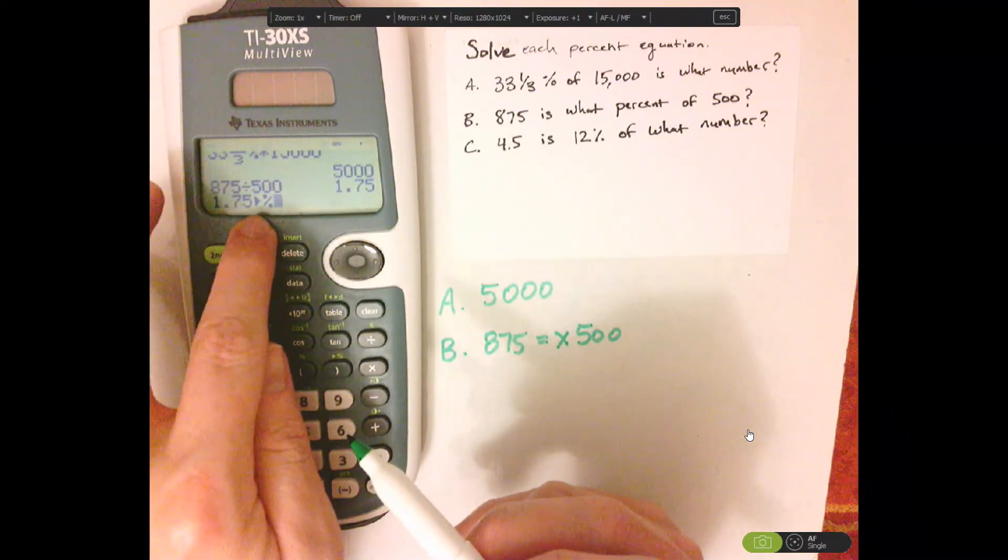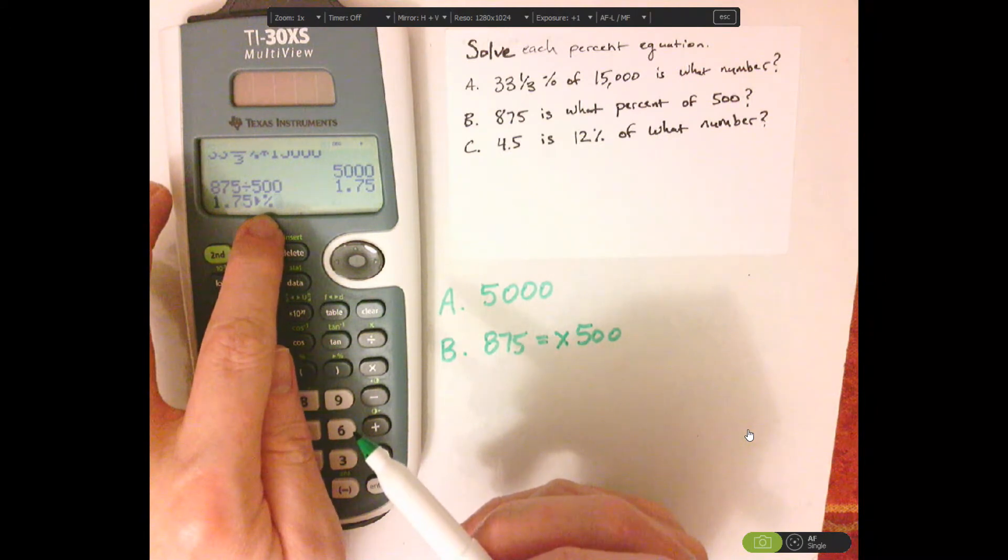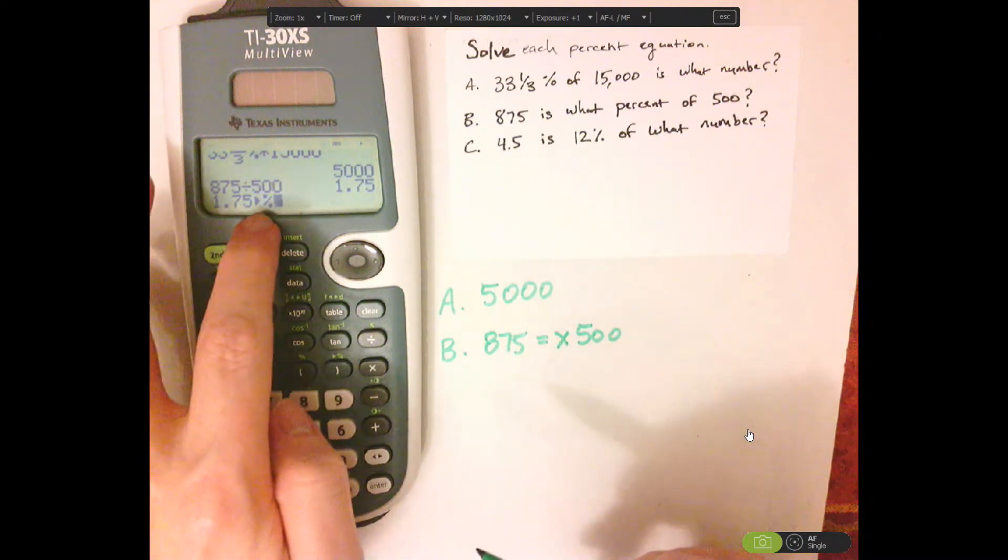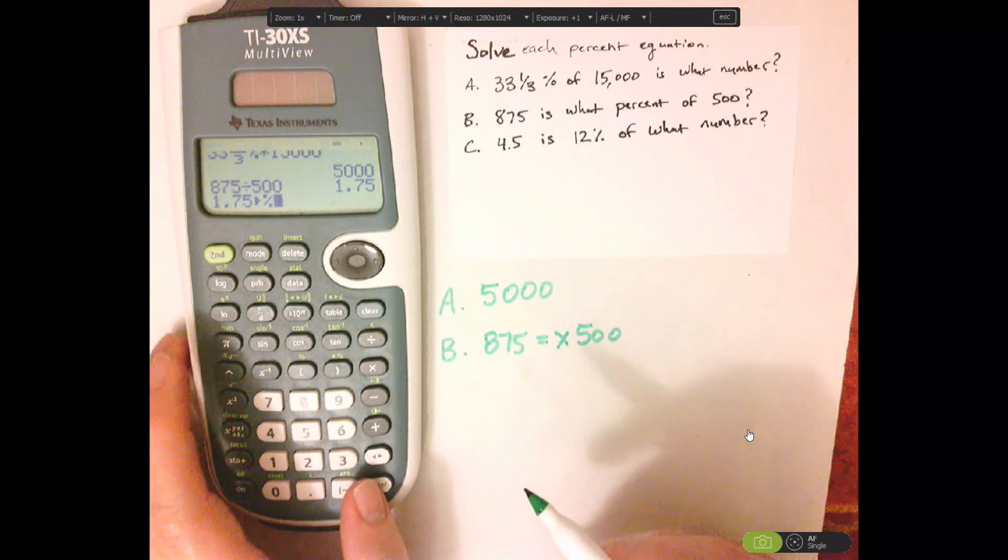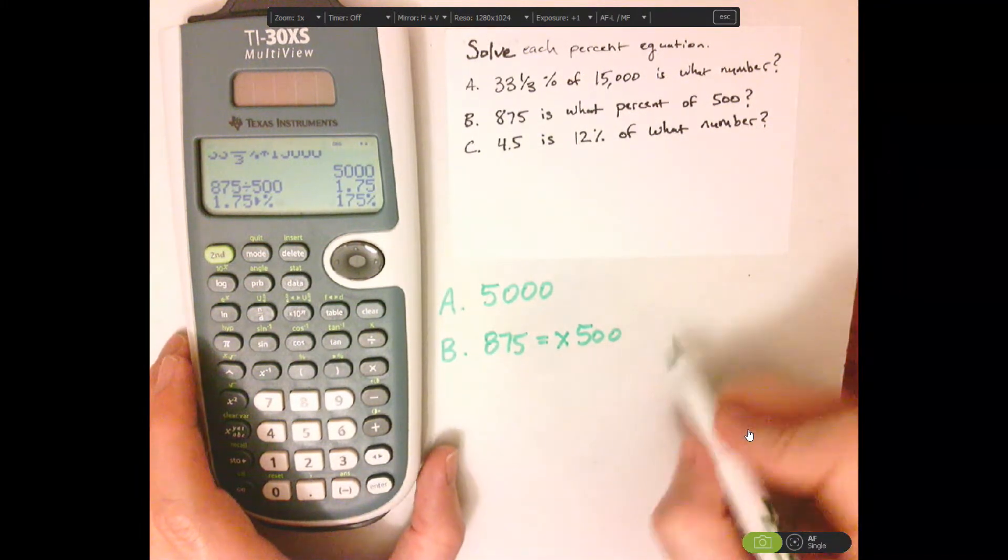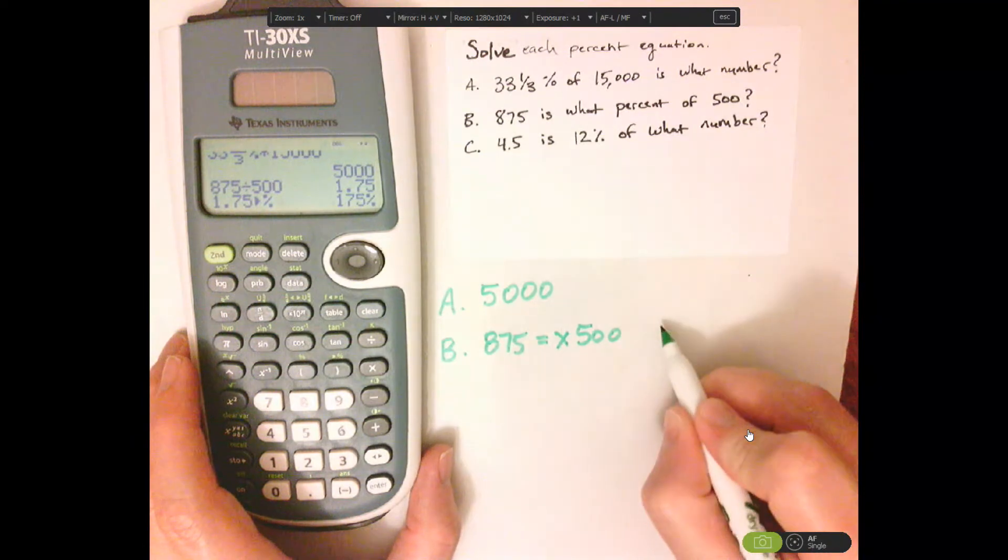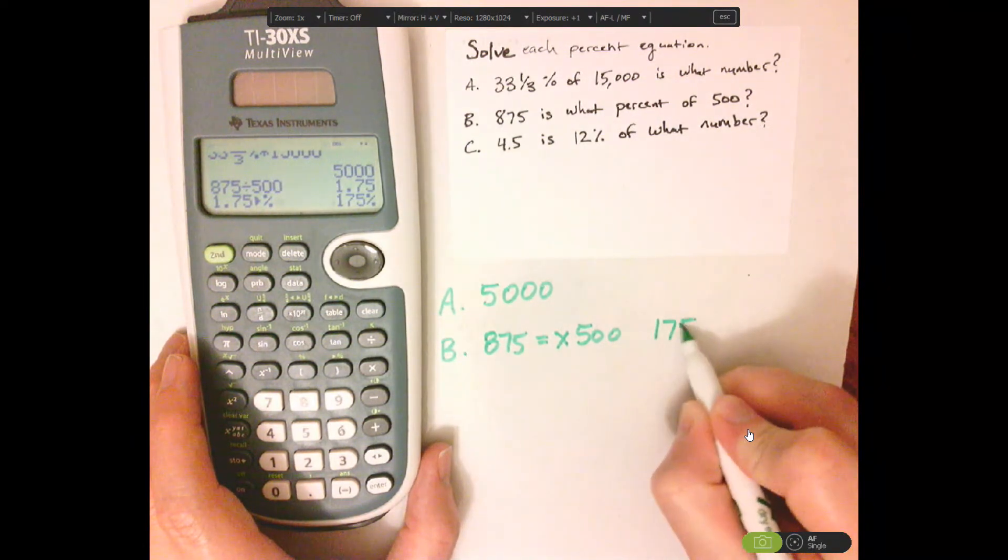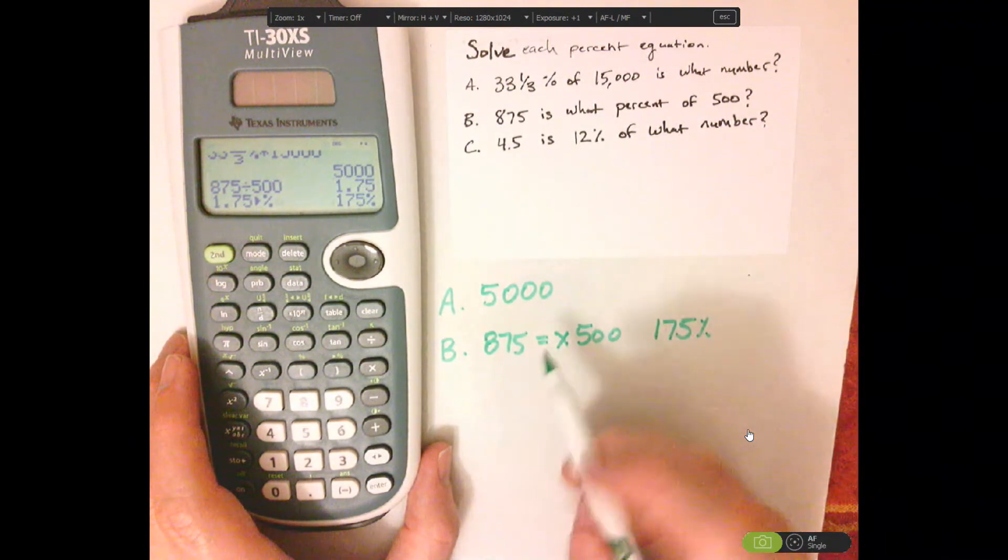You do that, it's going to take the answer, and then put it like a conversion, and then a percent, and then push enter, and it converts it to a percent. So that would be 175 percent for letter B.